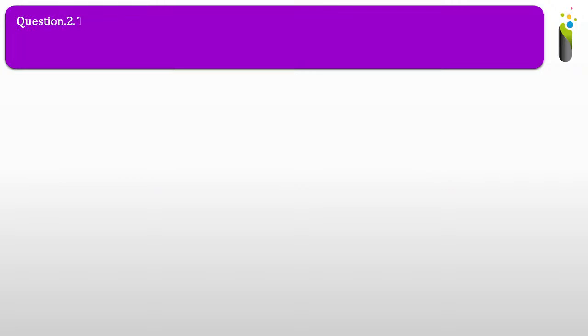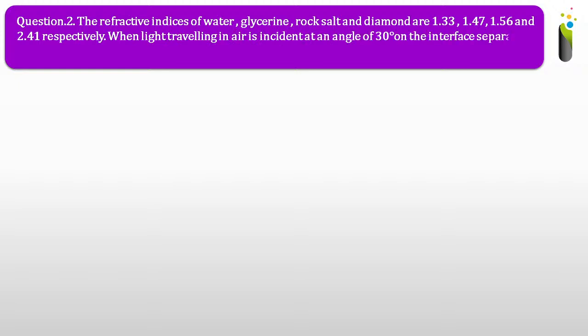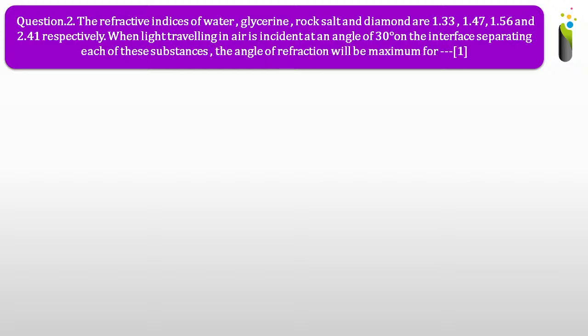Going to question number two. The refractive indices of water, glycerin, rock salt and diamond are 1.33, 1.47, 1.56 and 2.41 respectively. When light traveling in the air is incident at an angle of 30 degrees on the interface separating each of these substances, the angle of refraction will be maximum for dash.